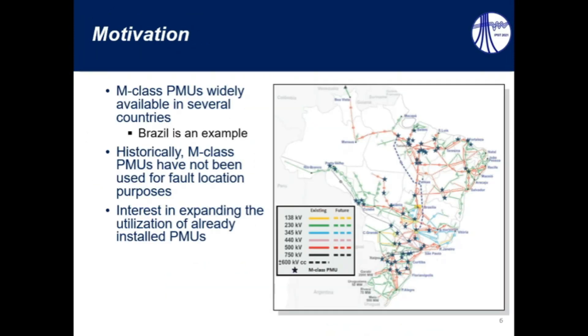On the other hand, M-class PMUs are widely available in several countries. For instance, Brazil has a lot of M-class PMUs installed in its transmission network, such as illustrated here by these stars, which represent the M-class PMUs installed in Brazil.